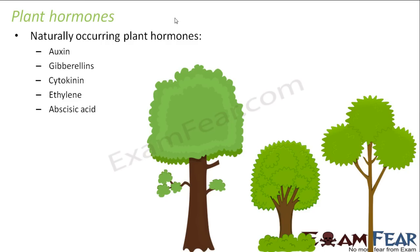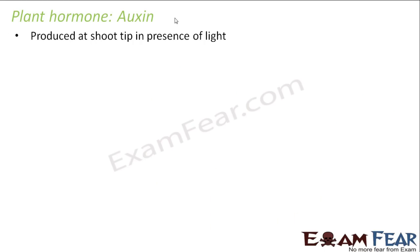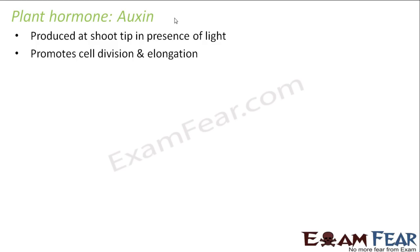Let us see how these plant hormones help in the movements associated with plants. Auxins are hormones produced at the shoot tip in the presence of light — this hormone gets produced only at the tip of the shoots. These hormones promote cell division and elongation, increasing the number and size of cells, which results in cell growth and in turn plant growth. In the presence of unidirectional light, auxin is produced at the shoot tips and its concentration is higher there.